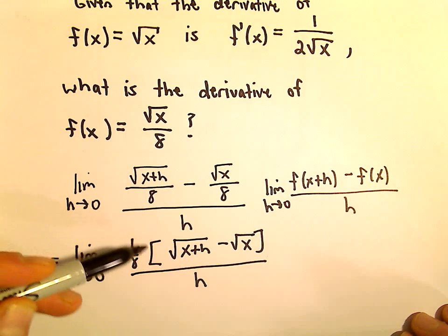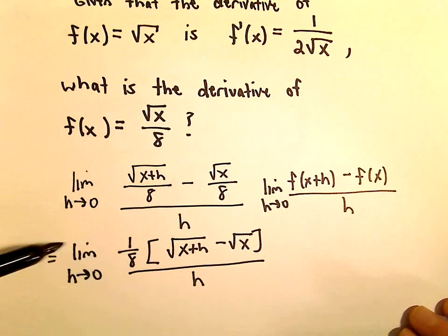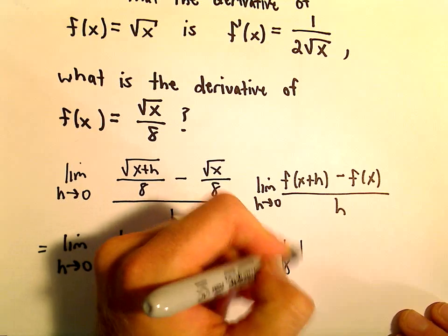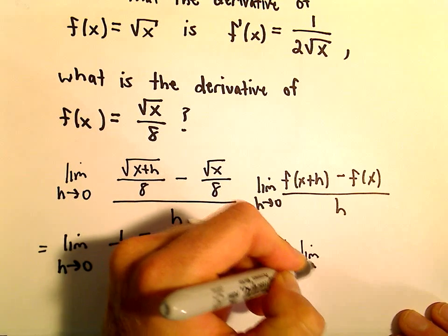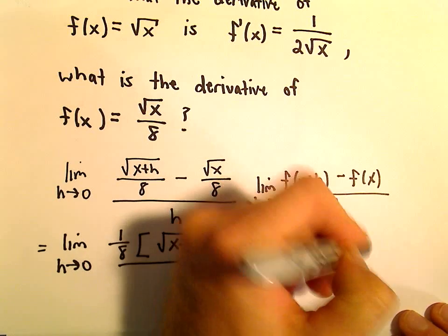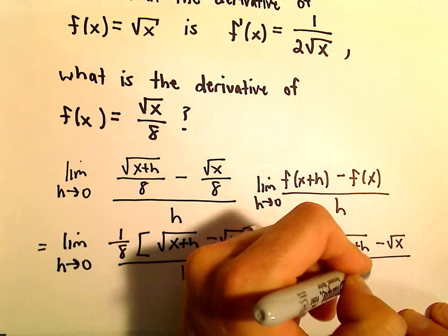So, this constant, 1 eighth, we can actually just factor that out front. So, we would have 1 eighth times the limit as h approaches 0 of the square root of x plus h minus the square root of x all over h.